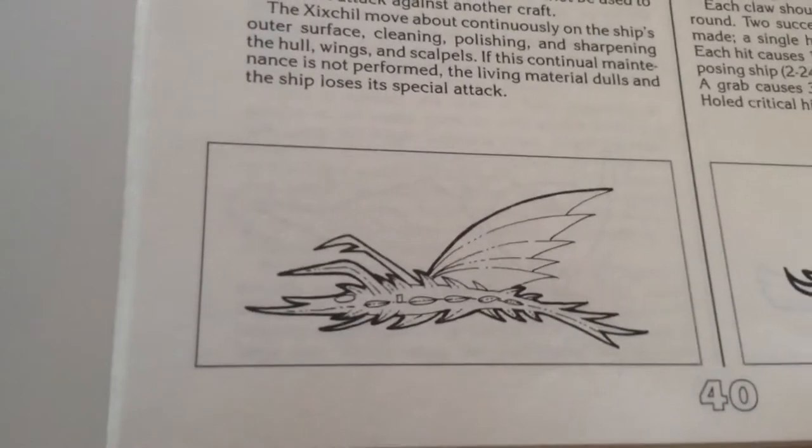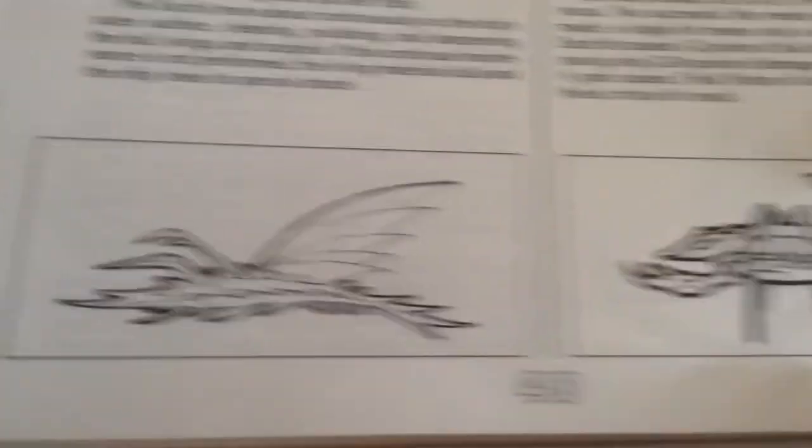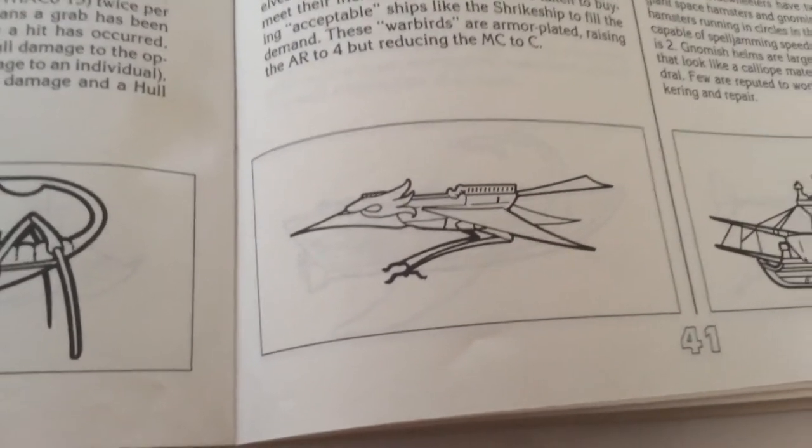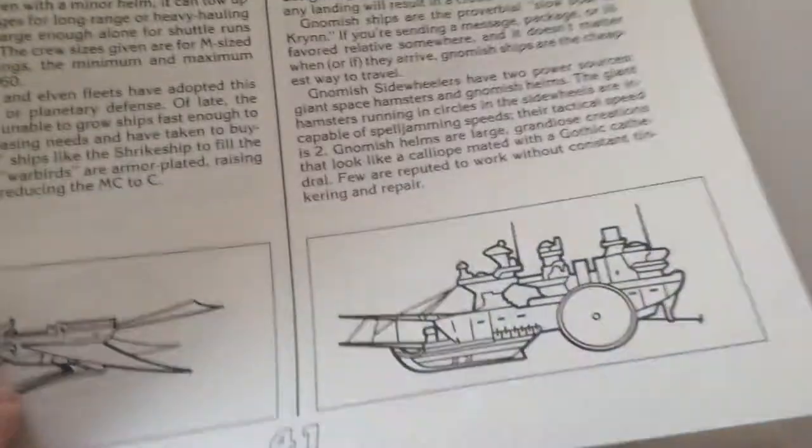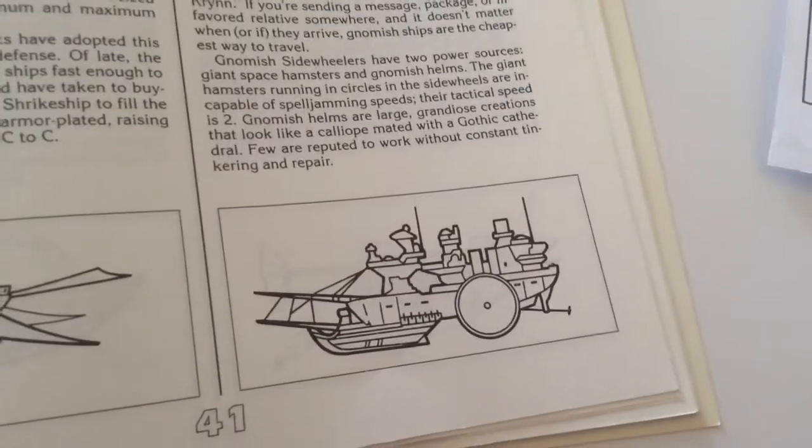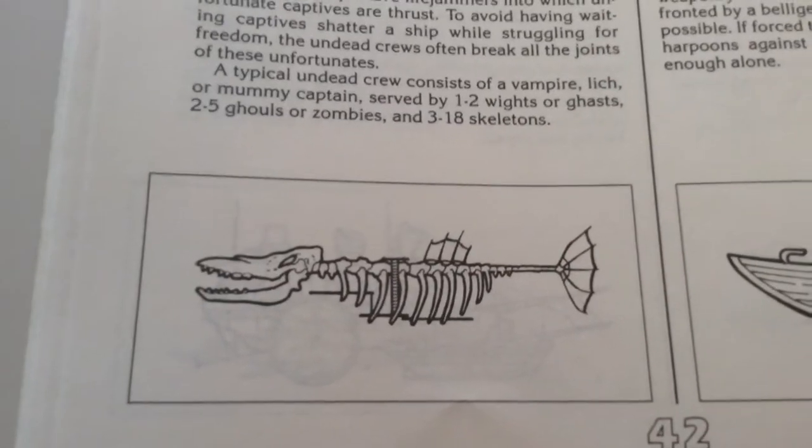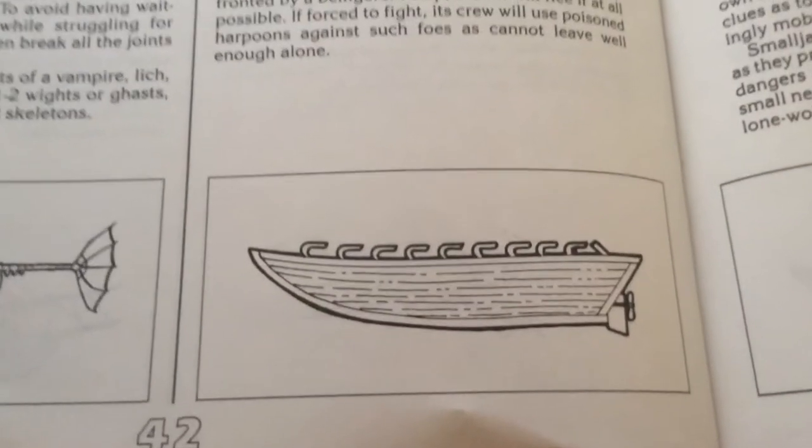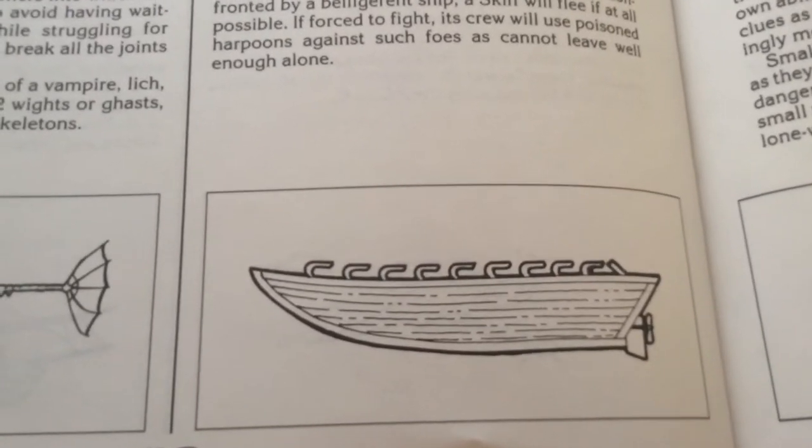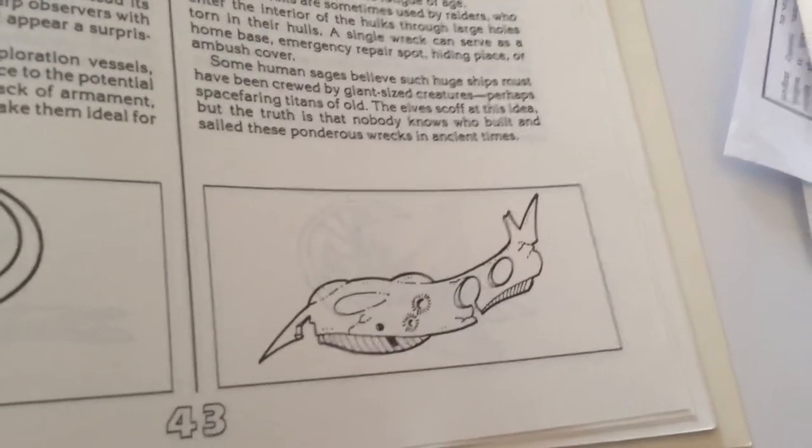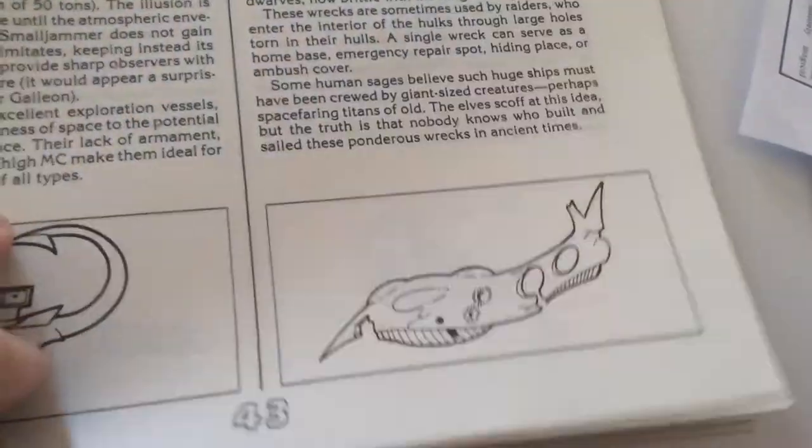This is a ziztral ship. The ziztral are insectoid race. The scorpion ship is an orc ship. The strike ship is a human ship. The sidewheeler, that's a gnomish ship. It has a giant space hamster who runs on a treadmill to wind up a giant rubber band which powers the ship. Tinker gnomes, remember. There's the skeleton ship that the undead use. A skiff used by the rockhoppers, whoever they are. A small jammer. The space leviathan, this was described in another book but there was no picture, so here it is. And the spell jammer.